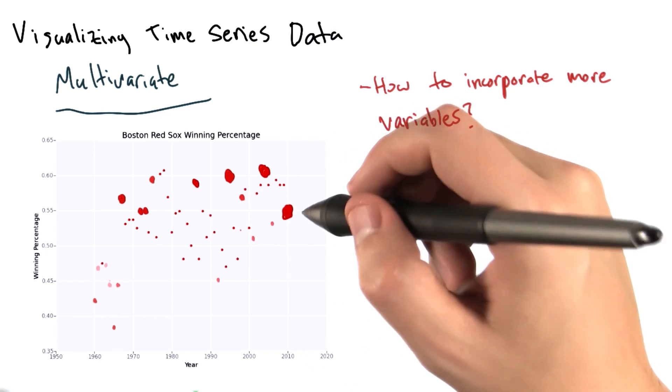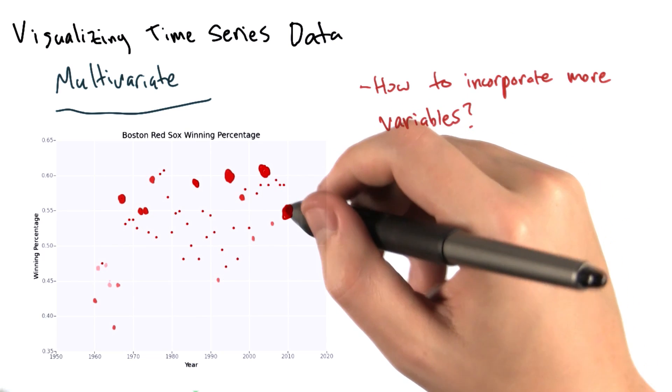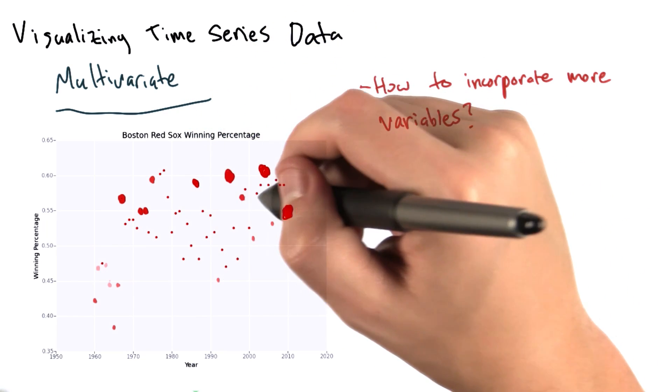Hopefully, what we would see is that bigger dots occur when the winning percentage is higher. I've filled the plot in with some dummy data just so that you have an idea of what this might look like.